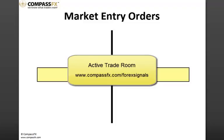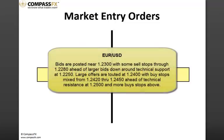Every day in my live active trade room, I share specific orders that I receive from various sources that institutions are placing in the marketplace. Here's one example — the EURUSD: bids are posted near $123.00 with some sell stops through $122.80 ahead of large bids down around technical support at $122.50. Large offers are touted at $124 with buy stops mixed from $124.20 through $124.50 ahead of technical resistance at $125 and more buy stops above. There's a lot of information in this little comment, as long as we understand the market orders in the marketplace.